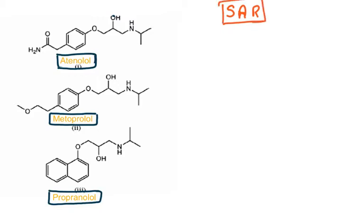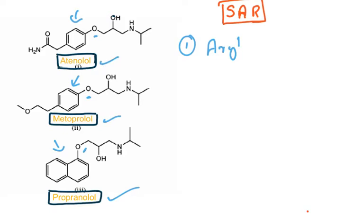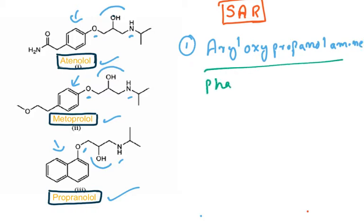Now for structure-activity relationship (SAR): analyze the marketed drugs and identify common patterns. Looking at propranolol, metoprolol, and atenolol — all contain an aryl ring attached to an oxygen atom (aryloxy), followed by a propanol group, then an amine group. This aryloxypropanolamine unit is the pharmacophore — the combination of atoms responsible for the mechanism of action. It must be present in the molecule to show beta blocker activity.